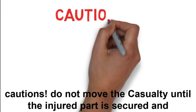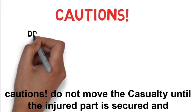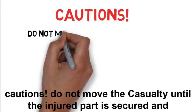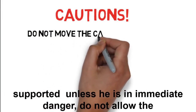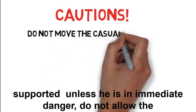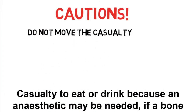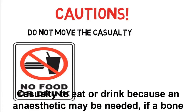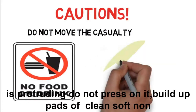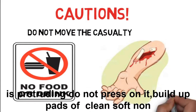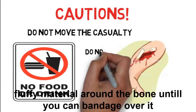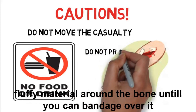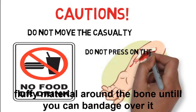Cautions: Do not move the casualty until the injured part is secured and supported, unless they are in immediate danger. Do not allow the casualty to eat or drink because an anesthetic may be needed. If a bone end is protruding, do not press on it. Build up pads of clean, soft, non-fluffy material around the bone until you can bandage over it without pressing on the injury.